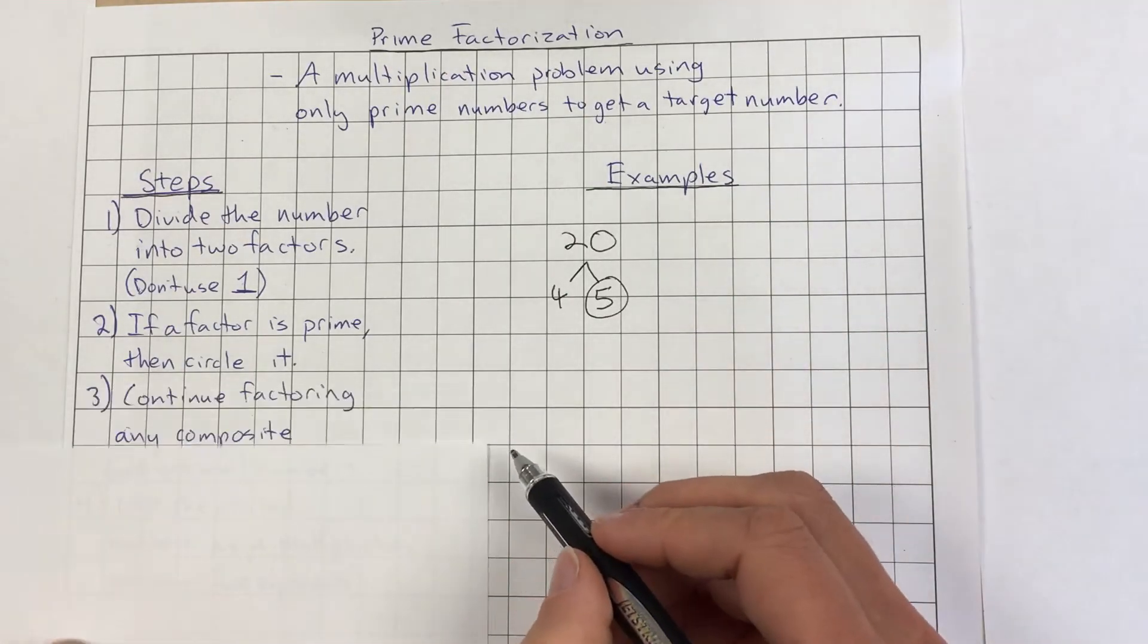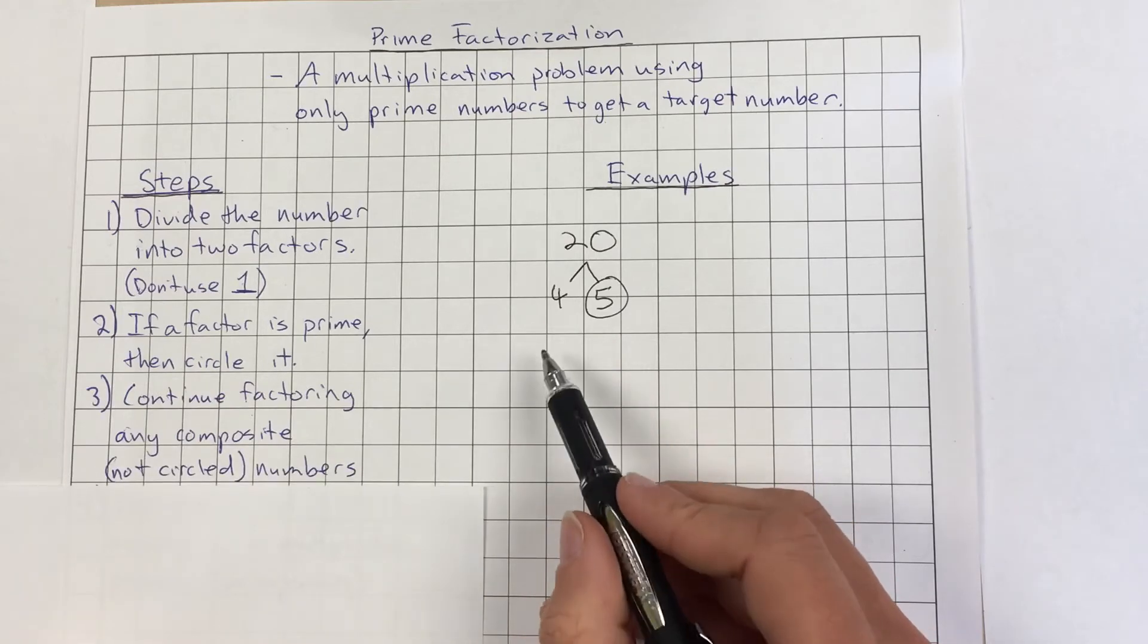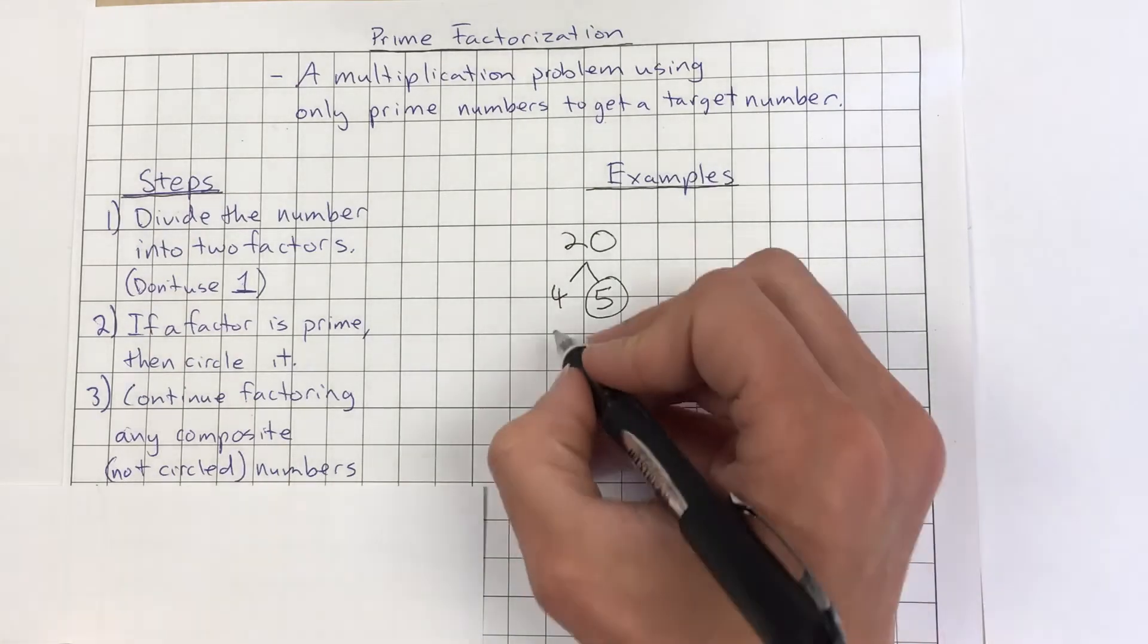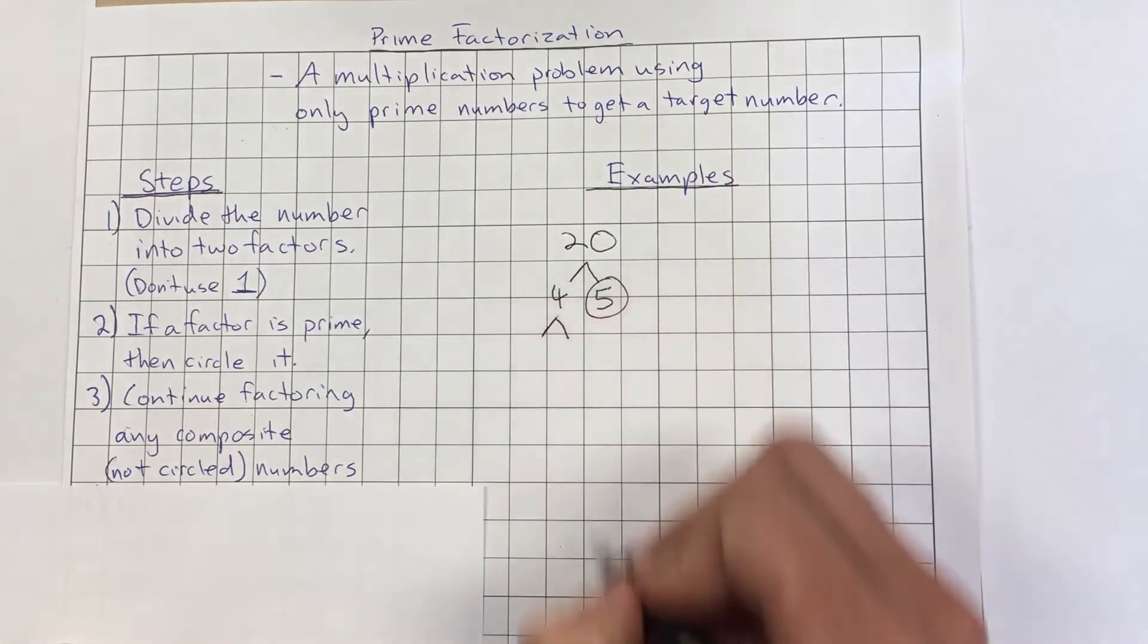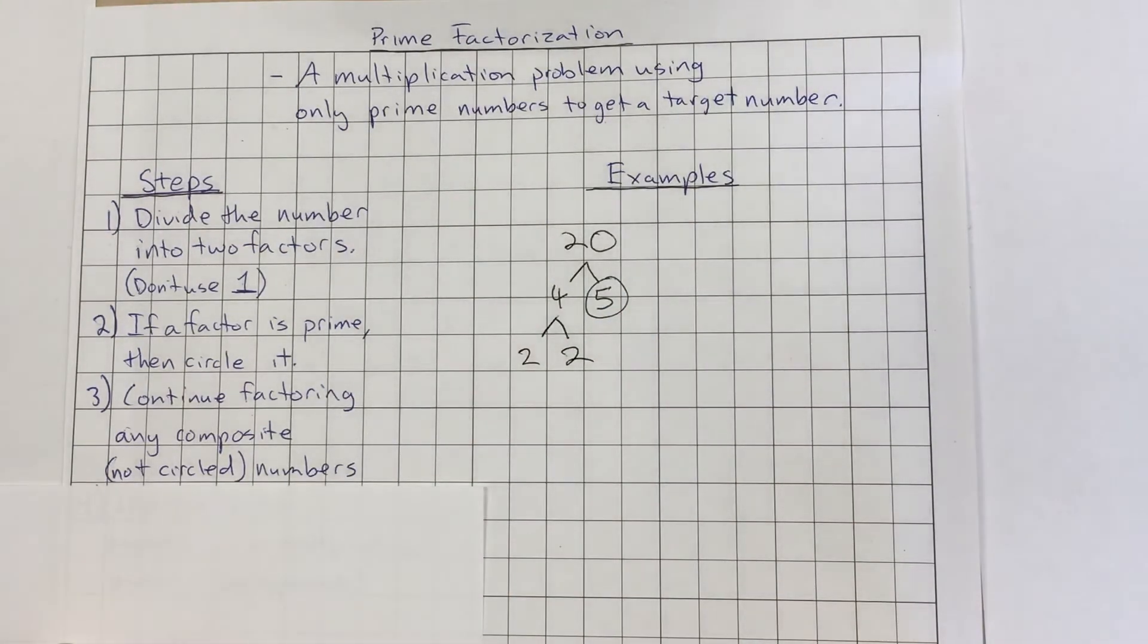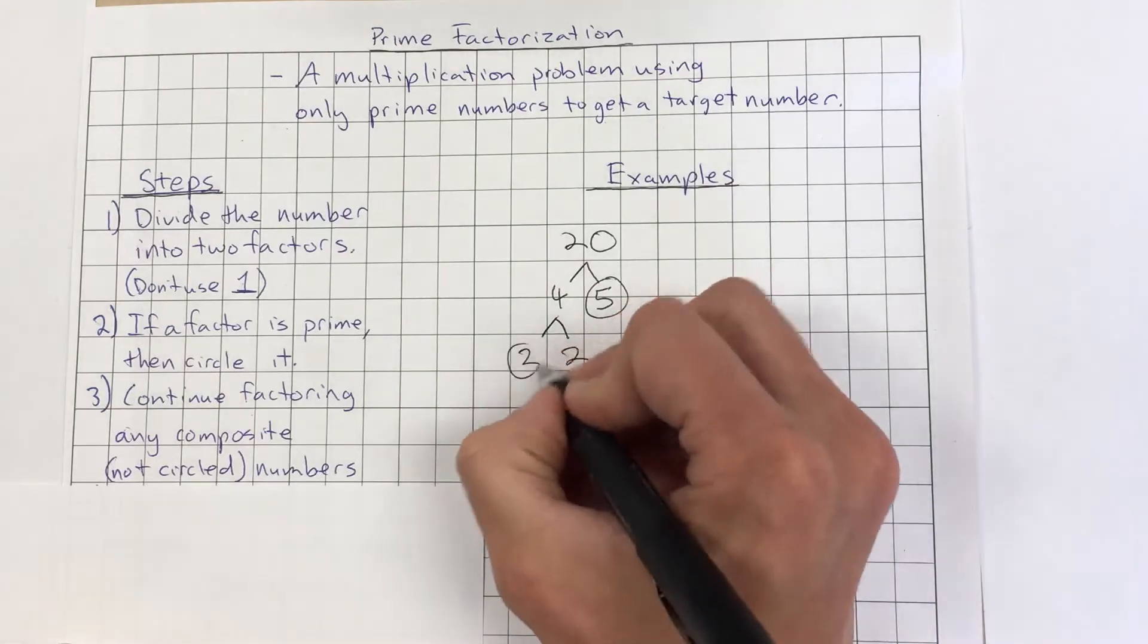Then we are going to continue factoring any composite numbers. If a number is not circled, if it's not prime, we're saying it's composite. That means it has more than two factors. So we're now going to split this up. And so we could split this up into 2 and 2. Now when we look at those, those are both prime numbers. So we're going to circle those.